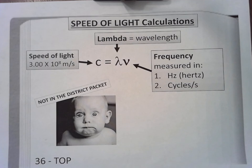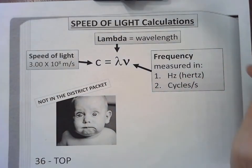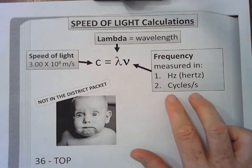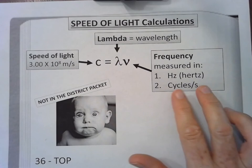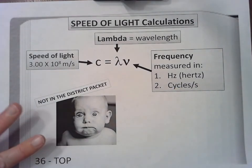This symbol right here is lambda and it represents wavelength — the distance between two crests. It is measured in meters because it's a length. Nu, or the V, is frequency and it's measured in Hertz or cycles per second. In the formula you're going to have to use cycles per second — I'll show you that — and a lot of times in the word problems it's labeled in Hertz.